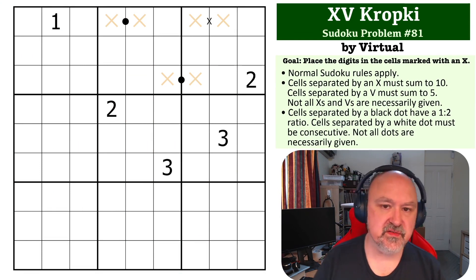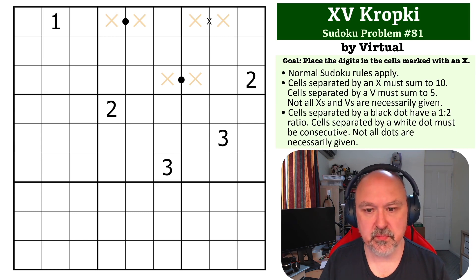There will be a link to the problem below and the goal is to place digits only in the cells marked with Xs. So XV and Kropki. Cells separated by an X must sum to 10, cells separated by a V must sum to 5.